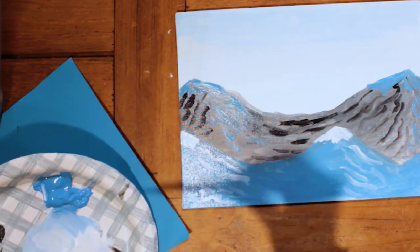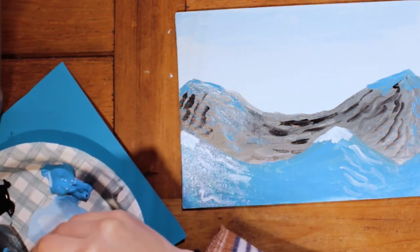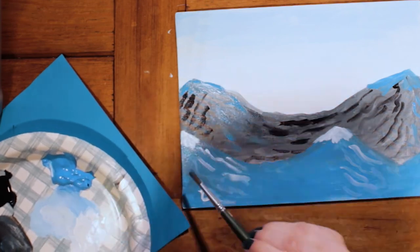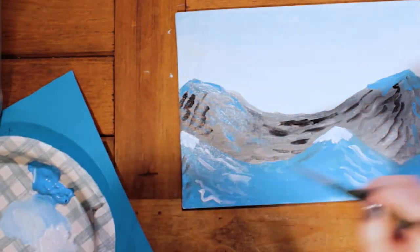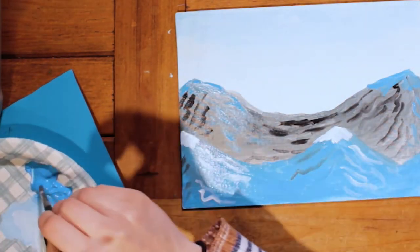Instead of adding black for the shadow side, you're going to take the blue and black mixture that you used when you made your first mountains.